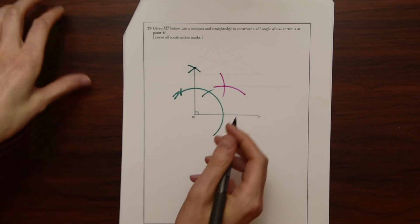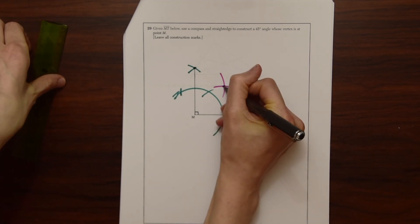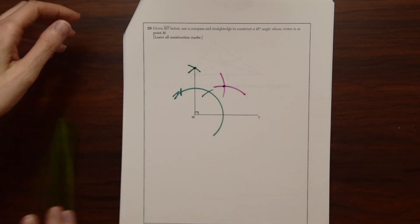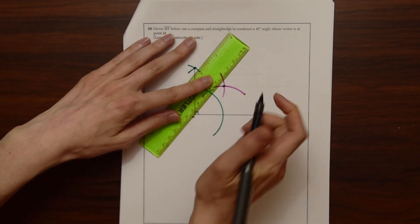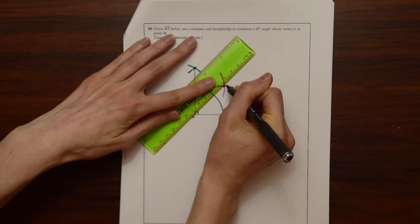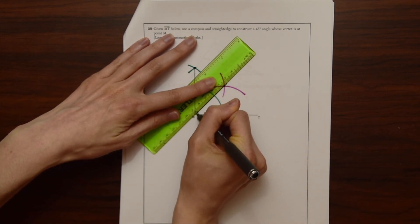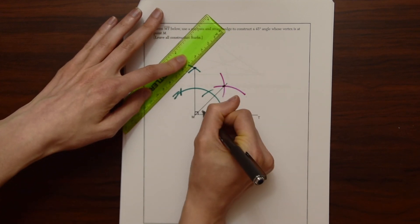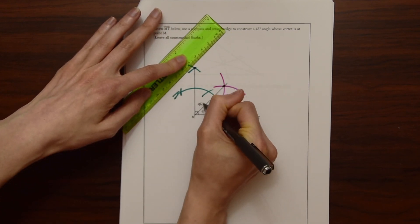And now notice we intersect at our angle, this point of intersection. If we bring this to point M where we started, that vertex, this is now 45 degrees and this is 45 degrees.